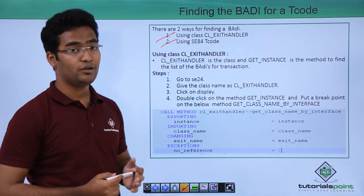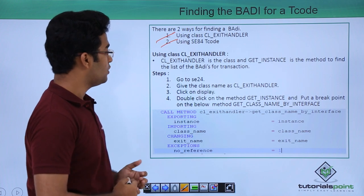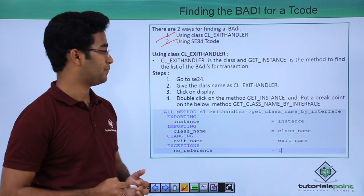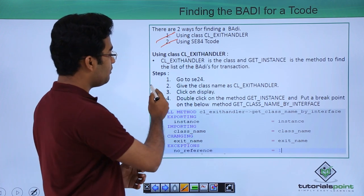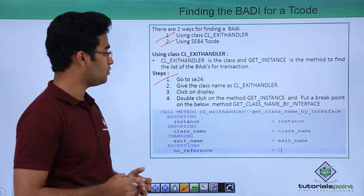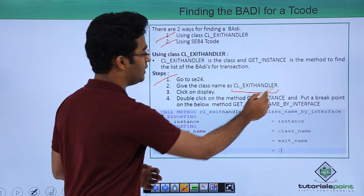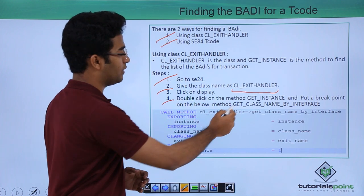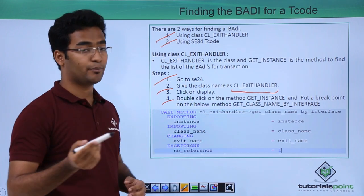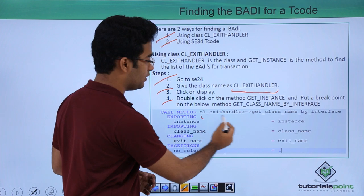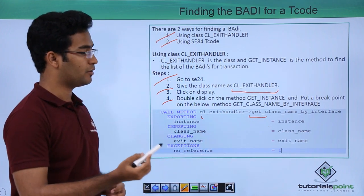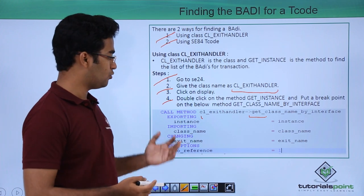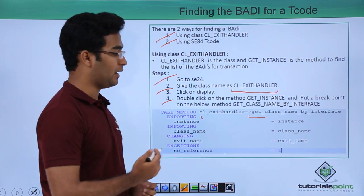Let us see how it is done using the class CL_EXIT_HANDLER. CL_EXIT_HANDLER is the class and get_instance is the method. First we have to go to SE24 transaction code, then we have to give the class name as CL_EXIT_HANDLER, click on display, and double click on the method get_instance. We put a breakpoint in the method get_class_name_by_interface. When we execute it, this would be triggered — so that means this is our BAdI.